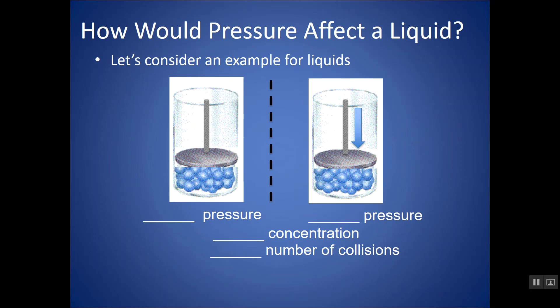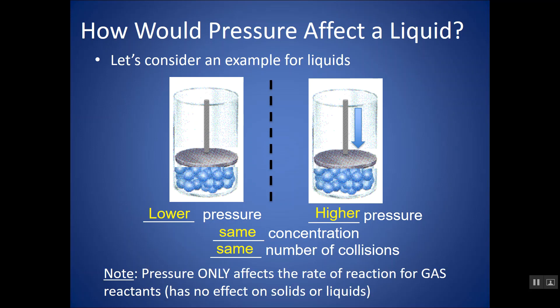What about a liquid or even a solid? Here I have two containers — one with lower pressure and one with higher pressure applied. Did I really change anything in terms of particle spacing? For a liquid, the particles are essentially already compressed together — very close to each other. By pressing on it, I'm not making them go any closer. So the concentration really stays the same and I have the same number of collisions. The takeaway is that pressure only affects the rate of a reaction for gas reactants. It has absolutely no effect on solids or liquids — their particles are already very close together, so compressing it would have no effect.